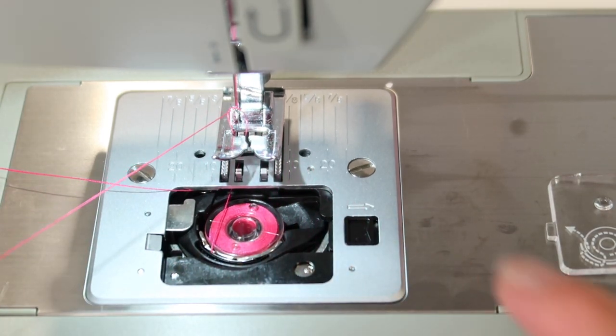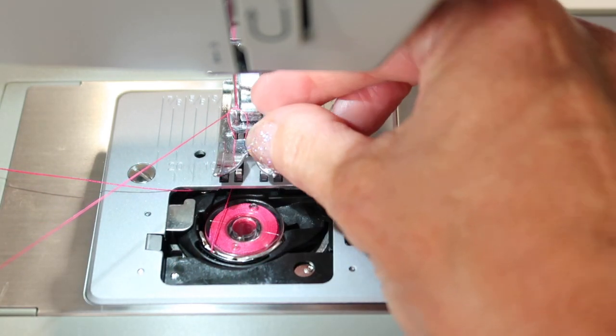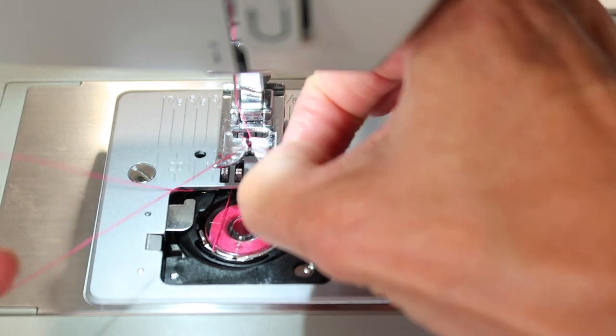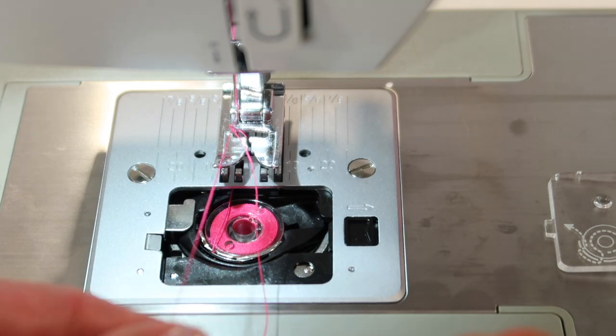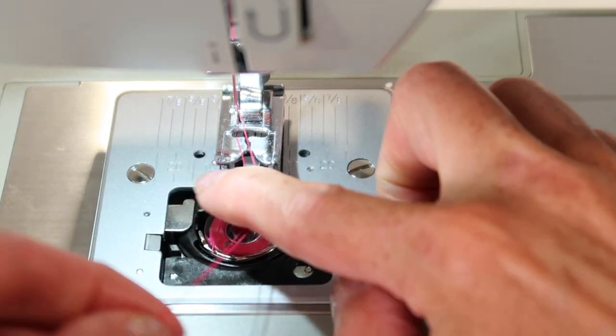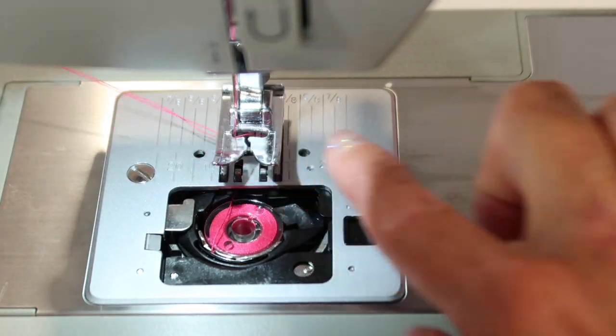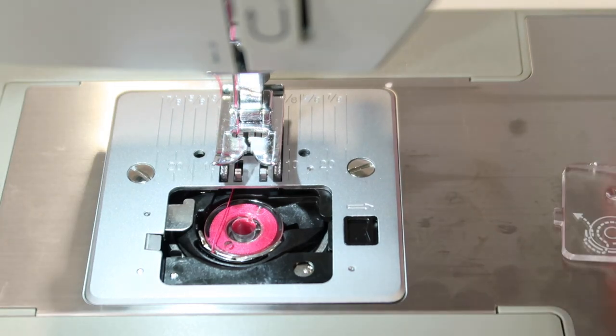And as you bring your needle all the way up to the highest position, you'll see that you can bring the bobbin thread up even through the foot, and then get a hold of it here. As I bring that all the way up, now both threads are on top of the machine, and I can slide them down the middle of the foot and be ready to sew.